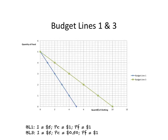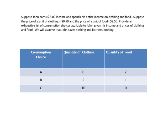Now keep Situation 1 in the background and look at a new situation. John still earns the same nominal income of five dollars. The price of clothing is 50 cents, but now the price of food increases to $2.50. So compared to Situation 1, clothing has become relatively cheaper and food has become relatively more expensive. Using the same method, we can construct a table giving an exhaustive list of consumption choices available to John.